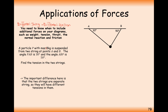Both strings are attached to this particle, which has a mass of 8 kilograms, giving a downward force of 8g. We have an angle of 30 degrees and 50 degrees. The question is to find the tension in both strings. The key difference here is that two separate strings have different tensions in them.